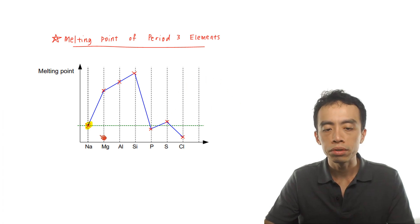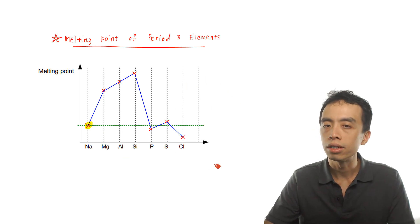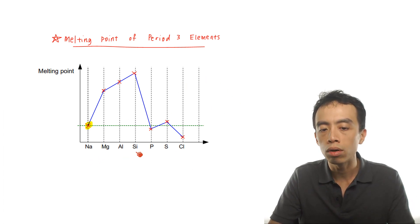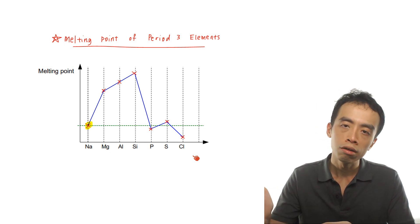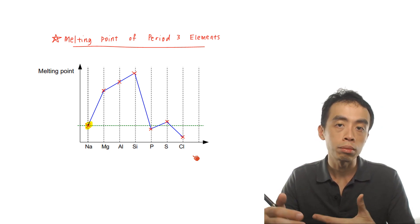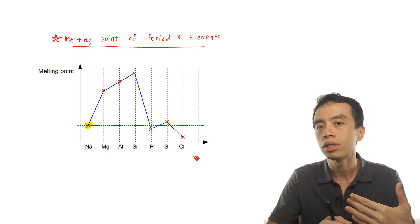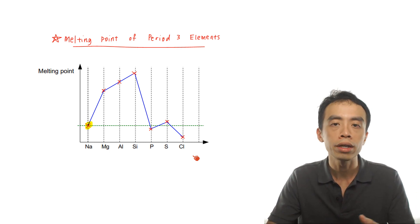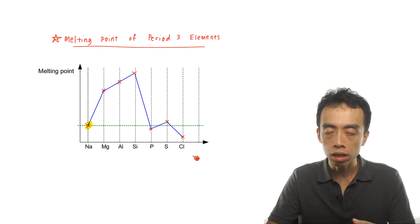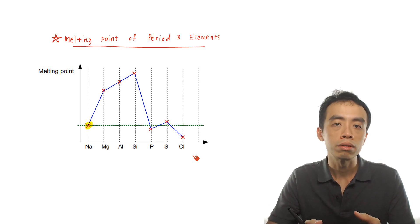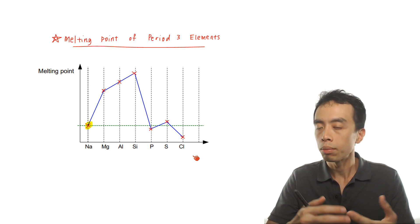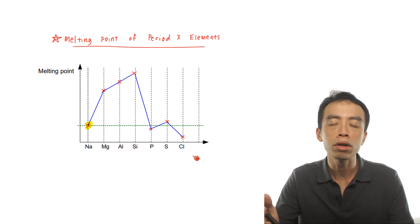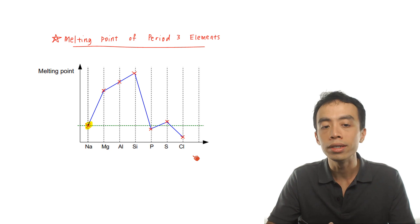The melting point trend of Period 3 elements is shown here from sodium all the way to chlorine. As we move across the period from left to right, we change from a metal to eventually a non-metal. So we expect a very big difference in melting point because it becomes a very different type of substance, and the factors affecting the melting point will differ greatly depending on what type of substance that element is.